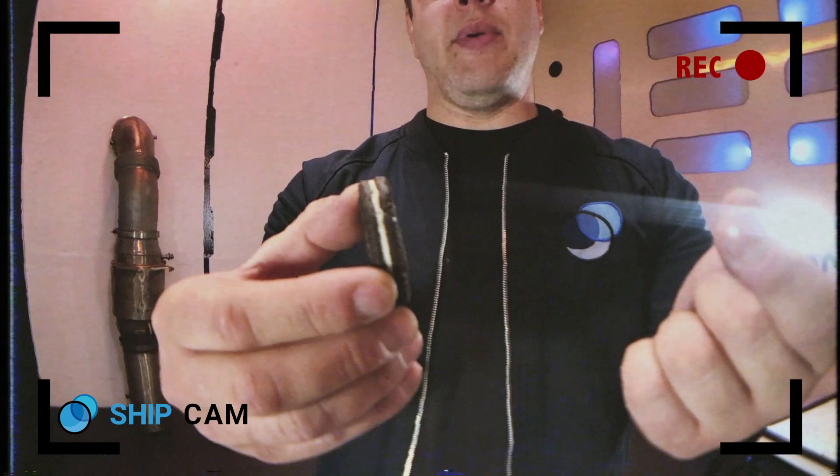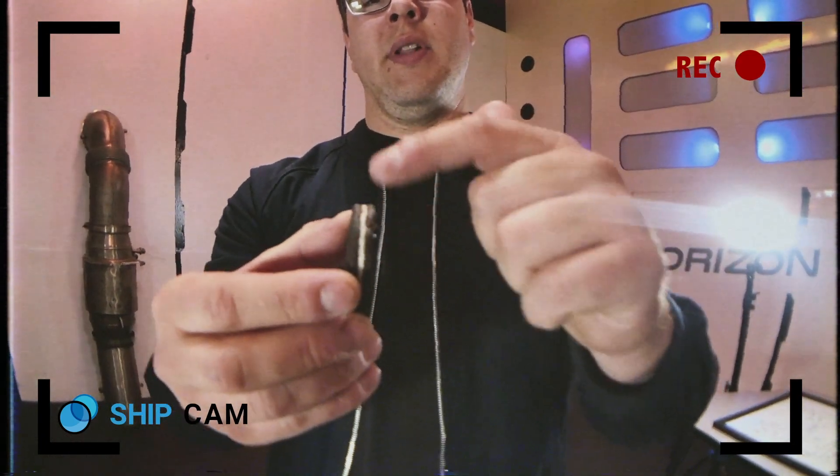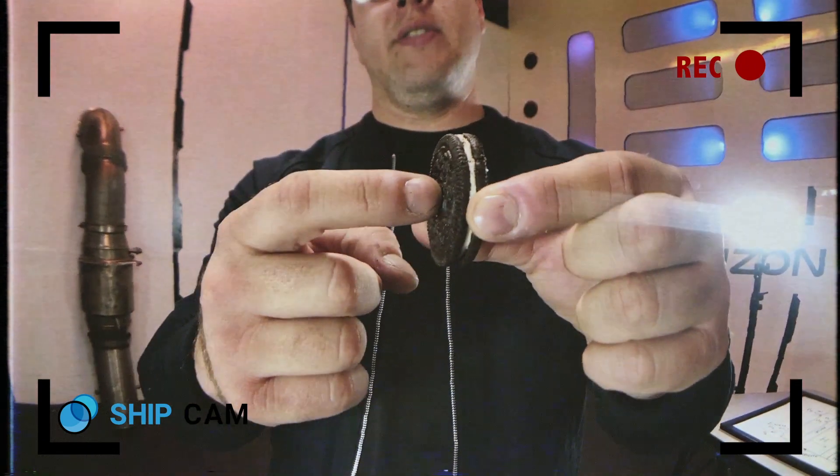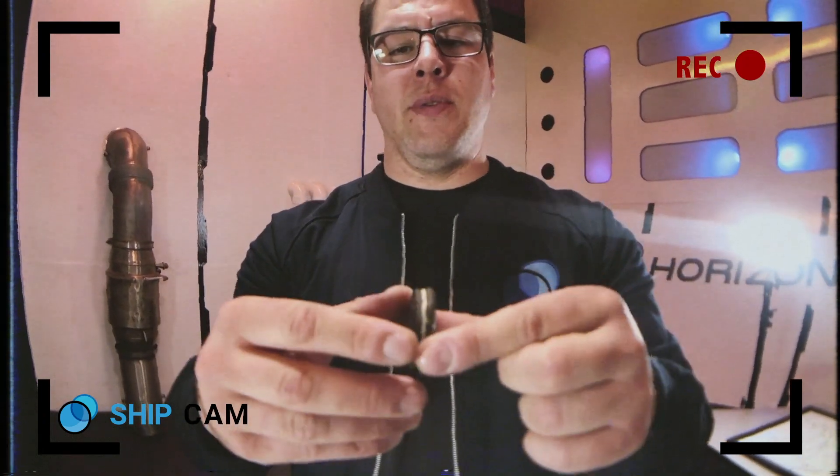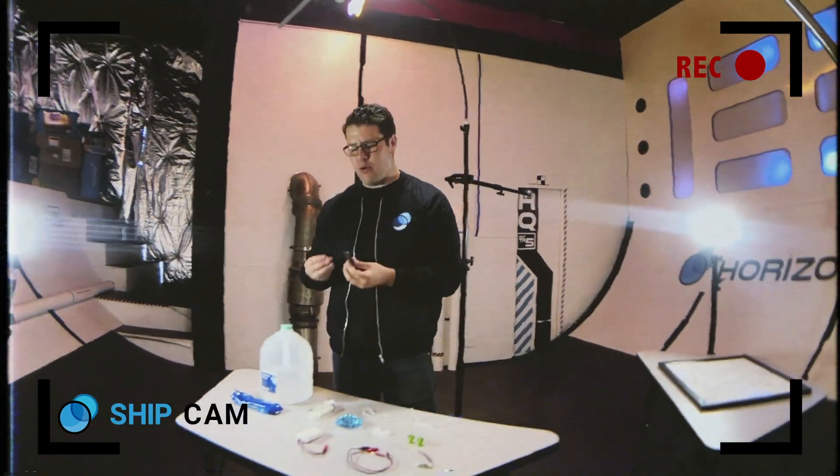And so what happens is you have hydrogen going in through one side. It kind of goes through this middle layer here and it mixes with oxygen on the other side and energy is produced. So essentially with an Oreo cookie and a fuel cell all the magic is in the middle. That's pretty good. I haven't had an Oreo in a while.